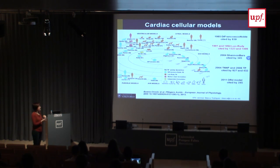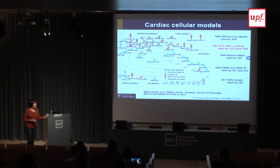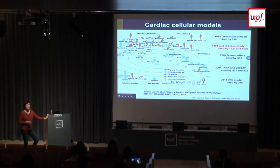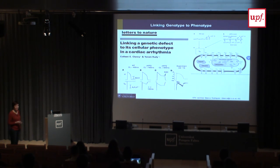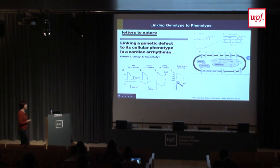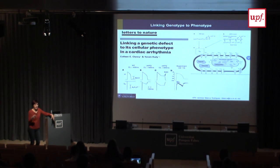Looking at the citations of these models, some have been cited hundreds of times - over a thousand papers have used the O'Hara-Rudy model. One key topic pioneered by Colleen Clancy and Yoram Rudy is linking genotype to phenotype. There are many papers contributing to understanding how genetic mutations, especially channelopathies affecting ion channels, can lead to phenotypes assessable in the clinic. This 1999 paper linking genetic defects and cellular phenotypes has led to many follow-up studies, and they are becoming increasingly important because of all the research being done in genomics.